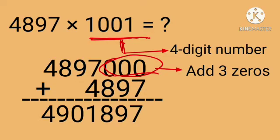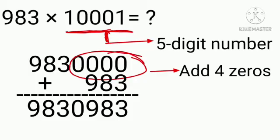Add three zeros to the right of 4,897, then add the given number and the number formed after adding zeros. Multiply 983 by 1,001: add four zeros to the right of 983, then add 983 and the number formed after adding zeros.